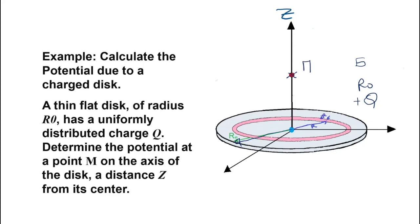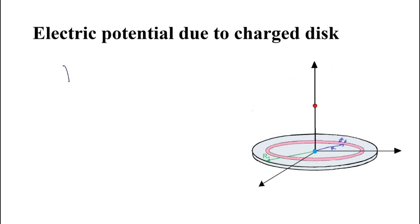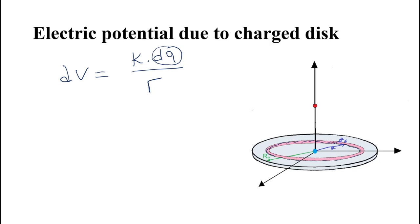We need to find the electric potential element. The definition of the electric potential element dV is the Coulomb constant times dQ over R. This is by definition. So dQ is the element of charge — I take it as the element of charge on this pink area. This element of charge on the pink area will produce an element of electric potential dV.